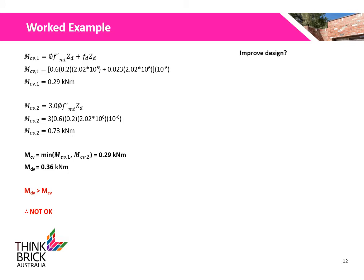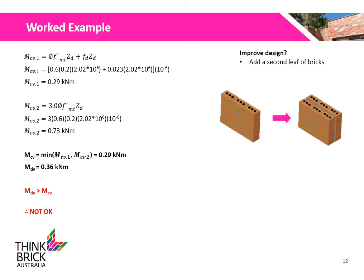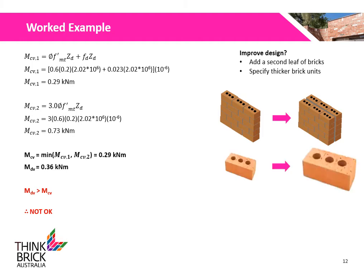So how do we improve this design? There are a few methods. Firstly, we can add another skin of brick to increase the overall vertical bending capacity. Secondly, we can use a larger brick unit to increase the section modulus of the bedded area, which in turn increases the overall vertical bending capacity. Finally, we can consider the overall contribution of the dead load from the slab to increase the compressive stress acting on the bed joint, which increases the overall vertical bending capacity. We will go through these in the following slides.